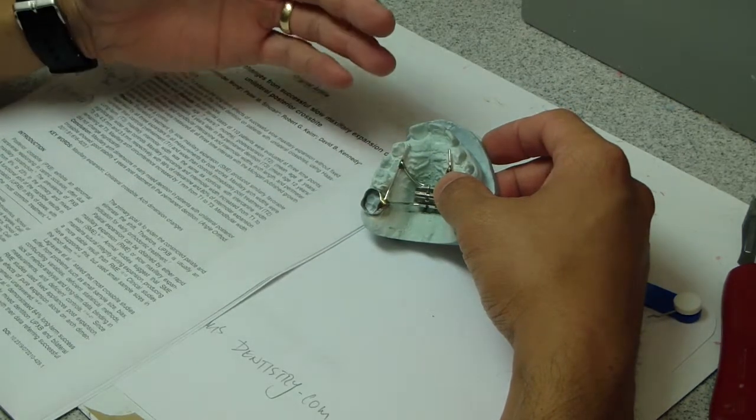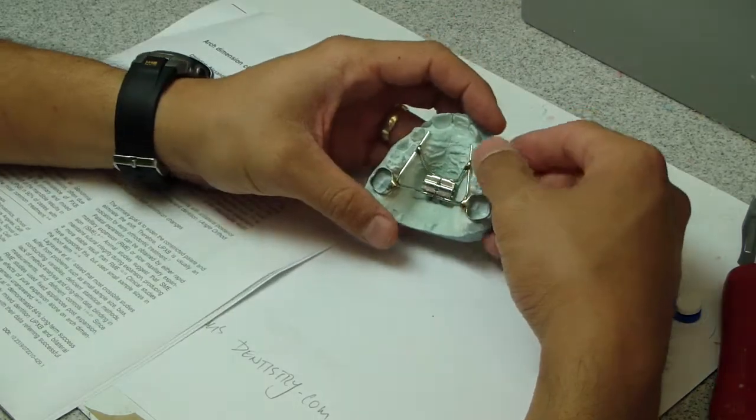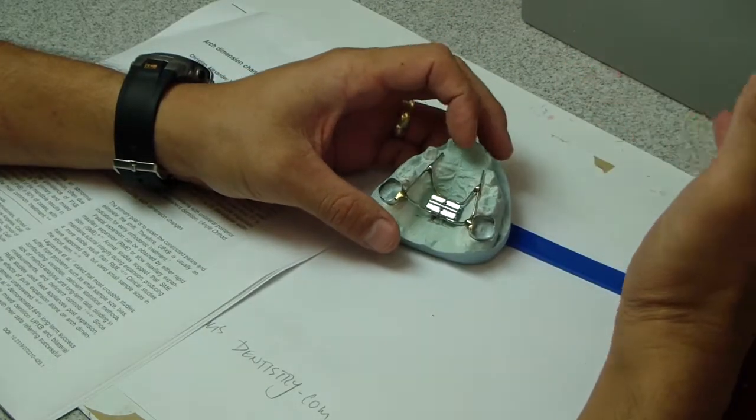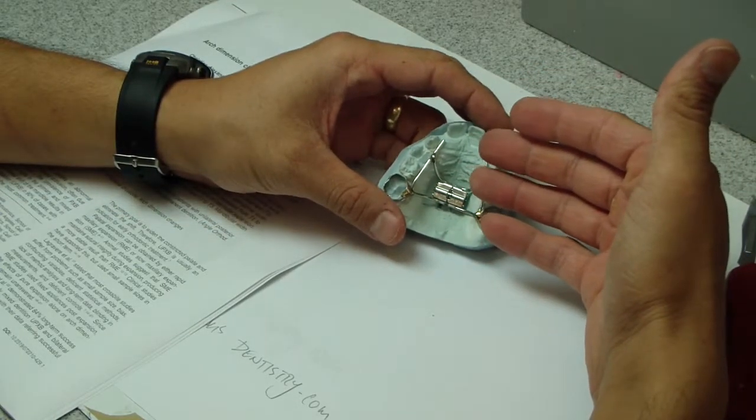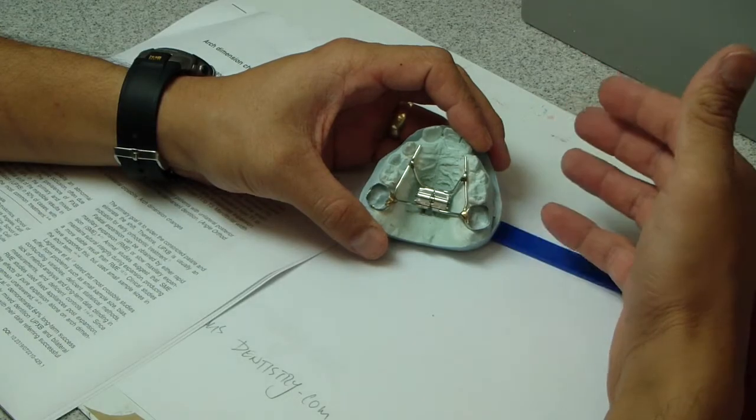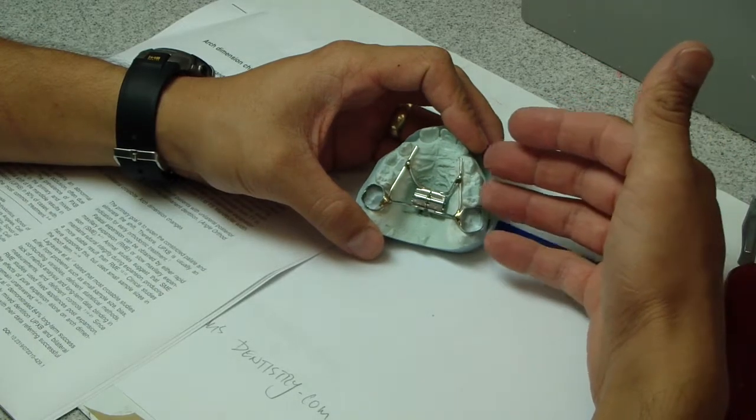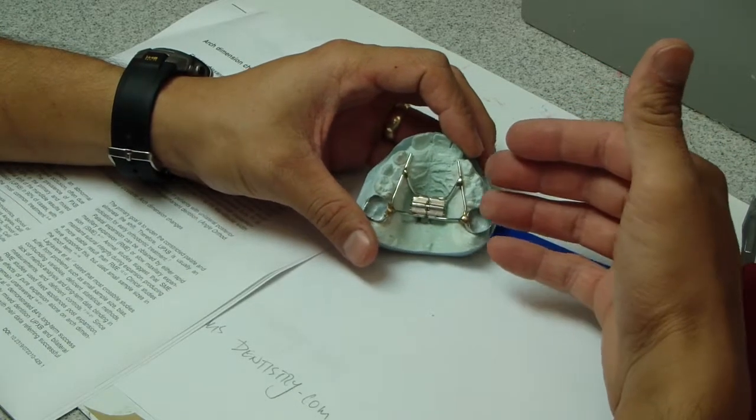So we can do this because the mid-palatal suture is not ossified and it typically up until about the age of 15 to 18. At that point then we can't do this type of expansion. If we place this kind of metal piece in a patient's mouth when they're an adult, it'll just start tipping teeth.